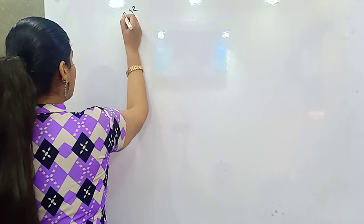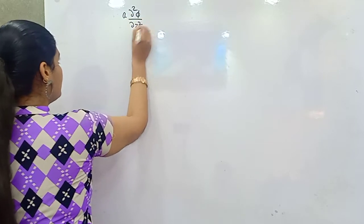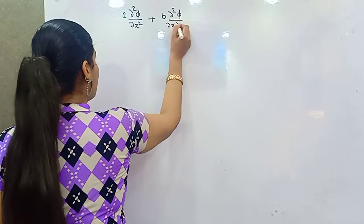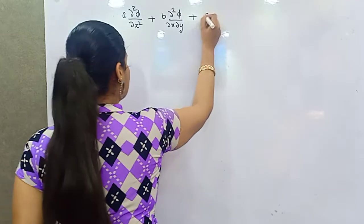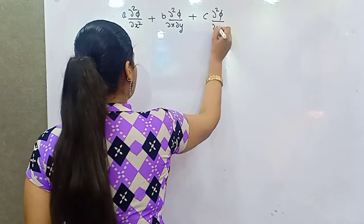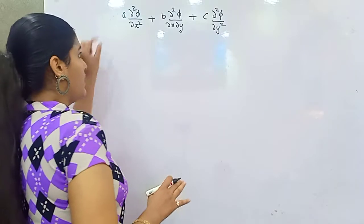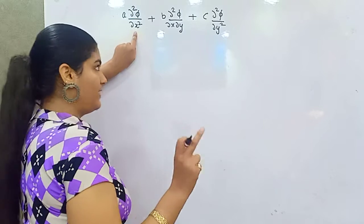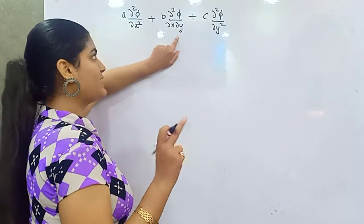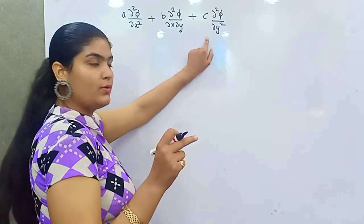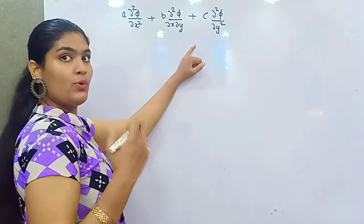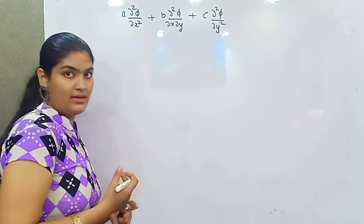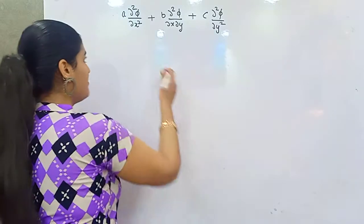Let's say you have a second-order partial differential equation of the form: A times the second partial derivative of phi with respect to x squared, plus B times the second partial derivative of phi with respect to x and y, plus C times the second partial derivative with respect to y squared. Here A, B, and C are the coefficients of double differentiation with respect to x, x and y, and y respectively.